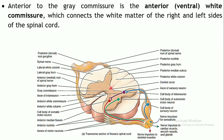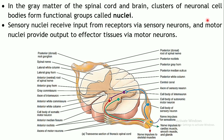Anterior to the grey commissure is located the anterior white commissure — also known as the ventral white commissure because it is on the front side. This connects the white matter of the right and left sides of the spinal cord. The two grooves divide the spinal cord into two halves, and the white matter on both sides is joined by this anterior white commissure.